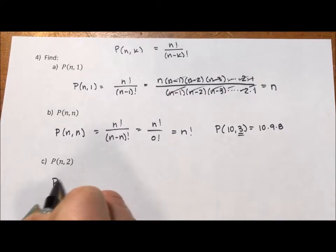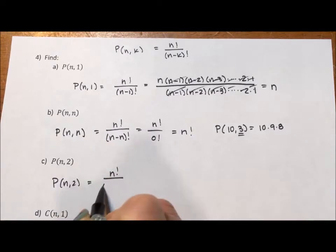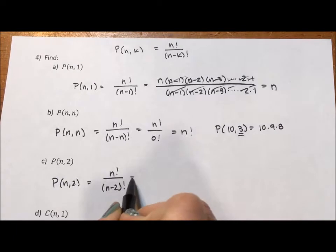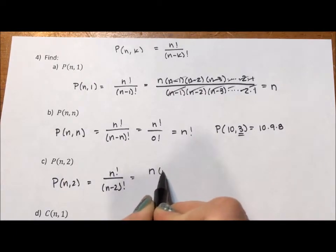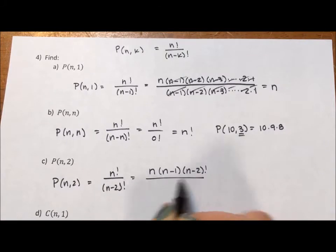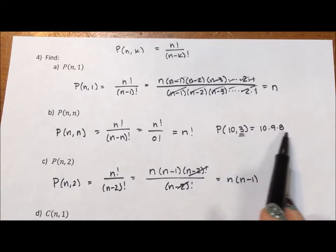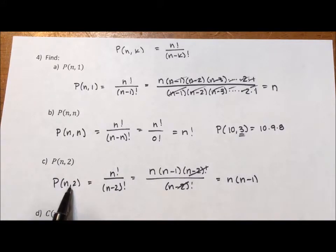So, P(n,2) is going to be n factorial over n minus 2 factorial. And if we come back to what I did on the first problem, this is going to be n times n minus 1 times n minus 2 factorial over n minus 2 factorial. The n minus 2 factorials divide out to be 1 and we're left with n times n minus 1, which is exactly what I did here. n items taken 2 at a time, n times n minus 1.